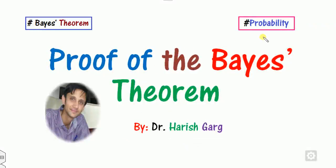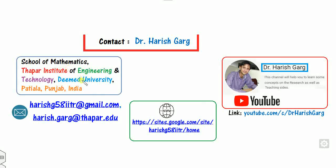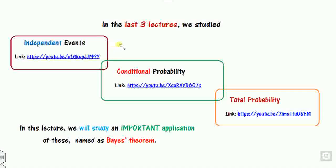Hello everyone, welcome to the next class on probability theory. Today we will discuss one of the most important parts in probability and statistics, called Bayes' theorem. We will see the proof of Bayes' theorem — summarized in just three lines. I am Dr. Gaur, working in the School of Mathematics. Based on the last three lectures on independent events, conditional probability, and total probability, we will study an important application called Bayes' theorem. The links to those three videos are already given in the description.